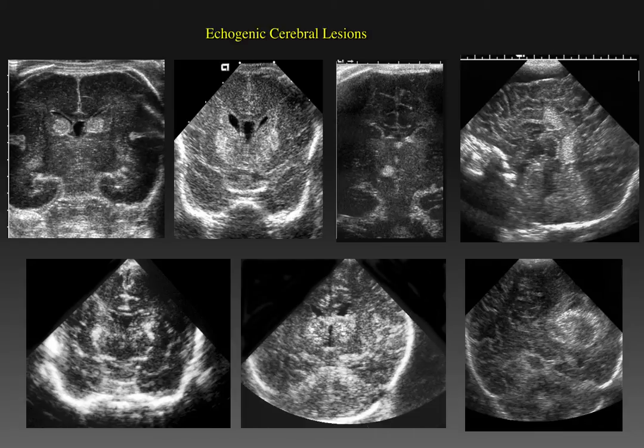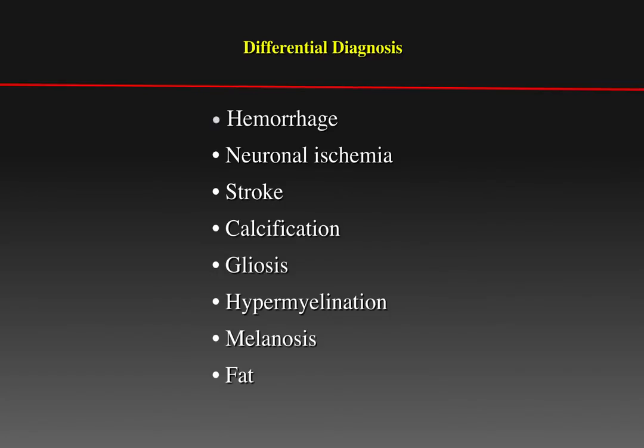The differential diagnosis of these lesions includes, in addition to hemorrhage, focal neuronal ischemia or stroke, both primary and secondary calcifications, gliosis, hypermyelinization, melanosis, and fat. Although they can have a very similar appearance,